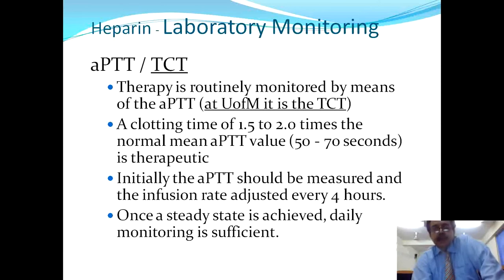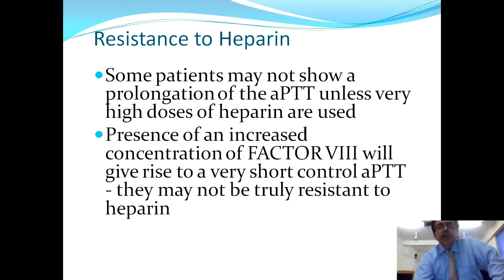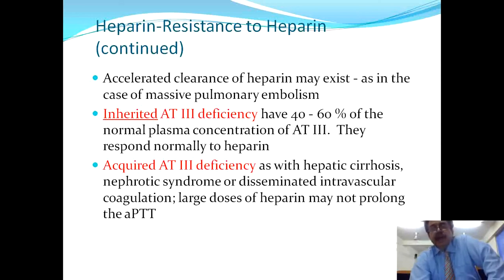Once a steady state is achieved, daily monitoring is sufficient instead of 4-hourly monitoring. Regarding resistance to heparin, some patients may not show prolongation of the APTT unless very high doses are given. This may be because of factor 8, which shortens APTT control. Continuing accelerated clearance of heparin may also be a cause, as in massive pulmonary embolism. Inherited antithrombin 3 deficiency is another cause of resistance since antithrombin 3 is the main mediator of heparin's effects.